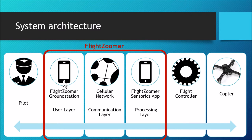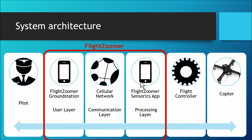These two devices are tightly coupled over a bidirectional data link via cellular networks. Commands to activate the autopilot modes are sent from the ground station to the companion computer. The actual execution is done completely and autonomously by the companion computer. The interaction with the flight controller is done via Bluetooth and MAVLink. Only user-layer relevant information is fed back to the ground station.